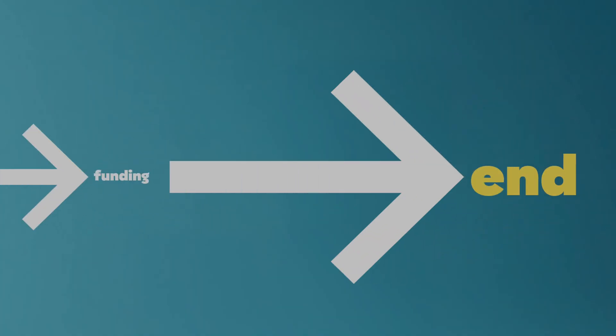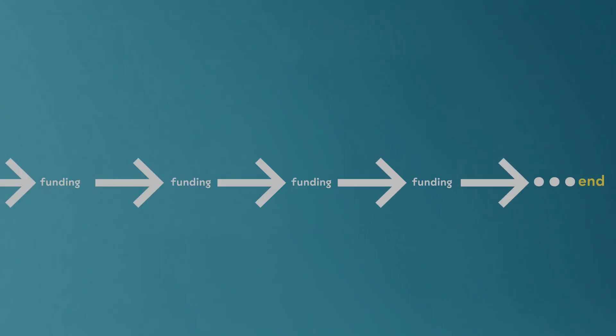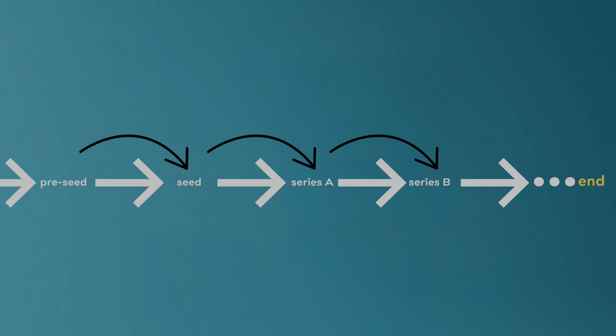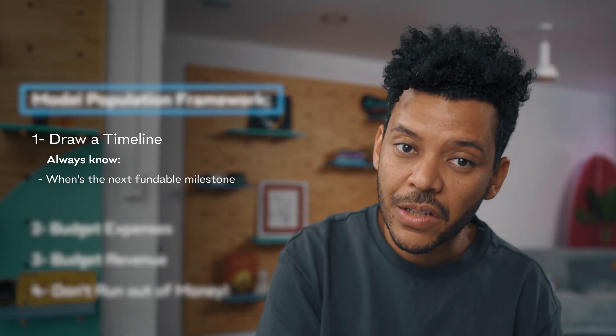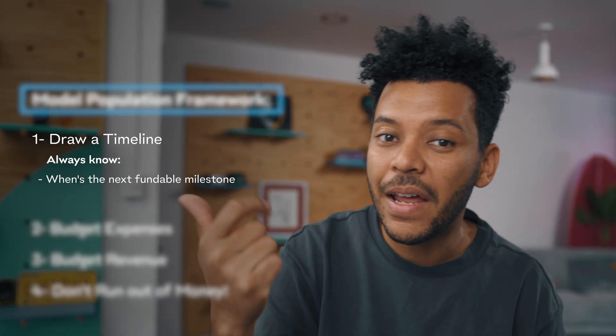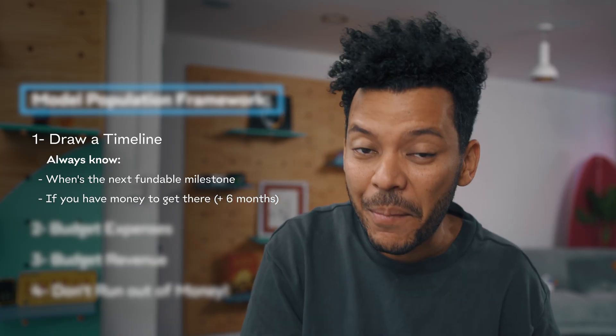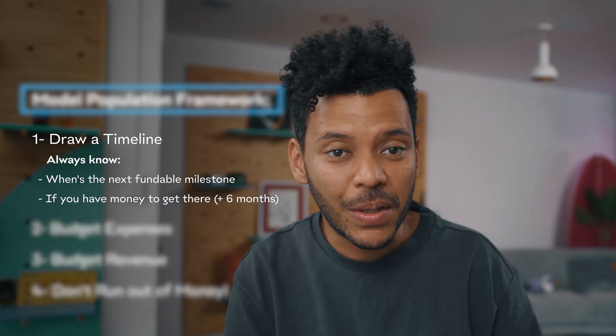Funding for tech startups works in milestones. When you raise money as a pre-seed company, you're budgeting enough money to get to the next fundable milestone — the seed stage — plus a few extra months to close that round and move forward. We have a whole video about funding rounds if you want to check that out. You should always know when you're reaching the next fundable milestone and ensure there's enough money to get there. Remember, closing a round takes about six months.